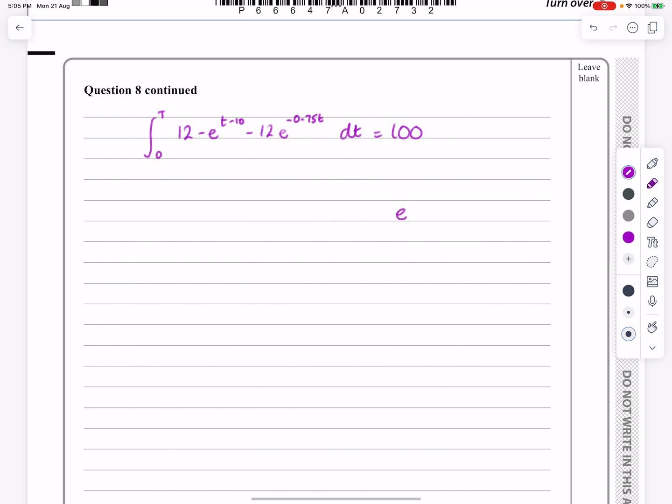They're trying to put you off here and just maintain your confidence. Are you resilient? Are you going to be able to go through and do something where it doesn't look very nice? We've got to do the integral between T and 0 of this function, which is 12 - e^(t-10) - 12e^(-0.75t) dt equals 100. What about the integral of e to the kx? Well, if I'm integrating e to the kx, it becomes e to the kx, but this time I'm dividing by k. So I'm just going to do that process all the way through this.